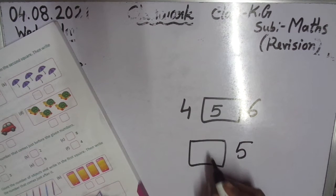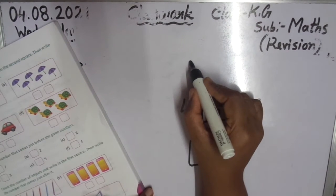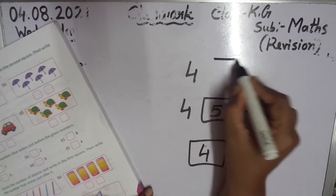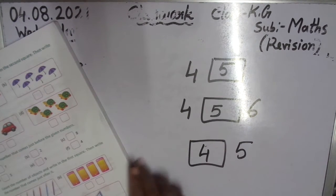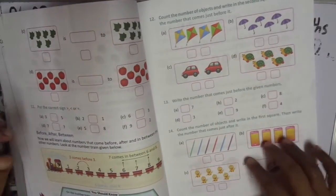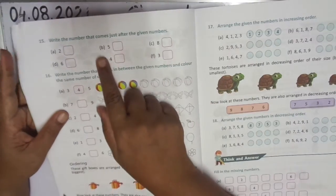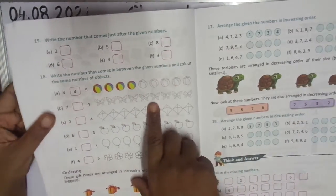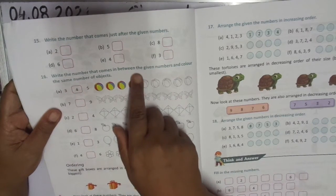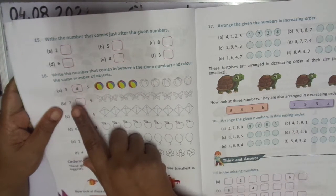Before 5 is 4. After 4 is 5. I hope you have understood — practice, it is very important. Page 15 and page 16 — see here: write the number that comes just after the given number. After 5 is 6, after 3 is 4. Page 16: write the number that comes in between the given numbers and color the same number of objects. Write the answer first and then color.